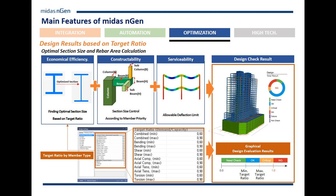One of the really good features is the design capability of the program. Design results can be based on different criteria — specific target ratios you specify, serviceability, or economical efficiency. For a steel structure, the program can find the ultimate optimal section. For reinforced concrete, the program can design the rebar either for ultimate strength or for serviceability.